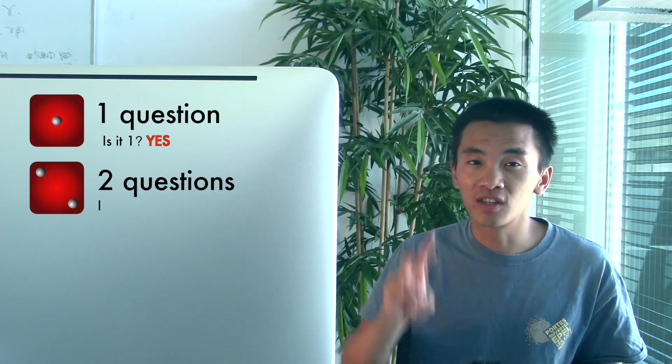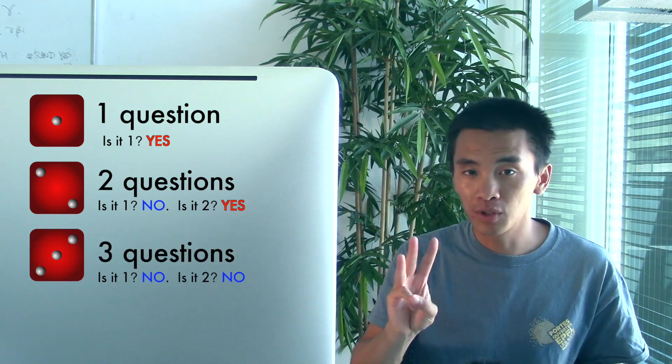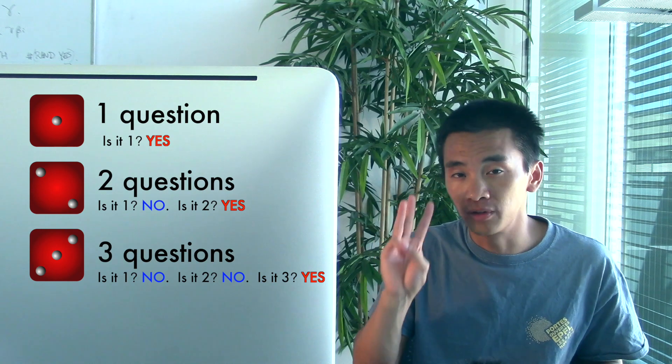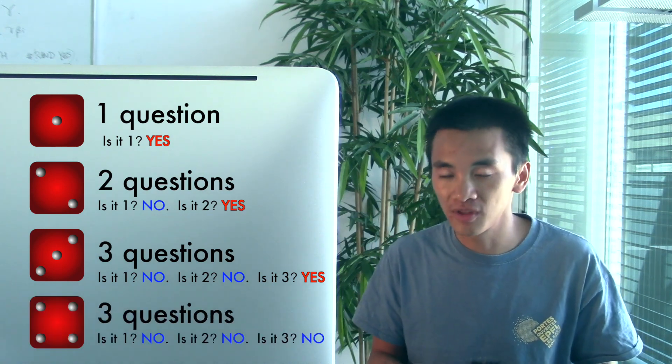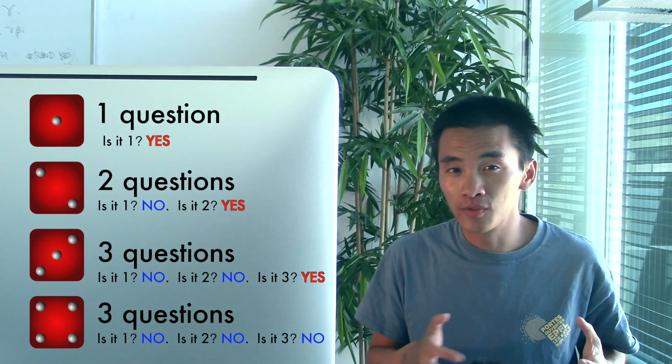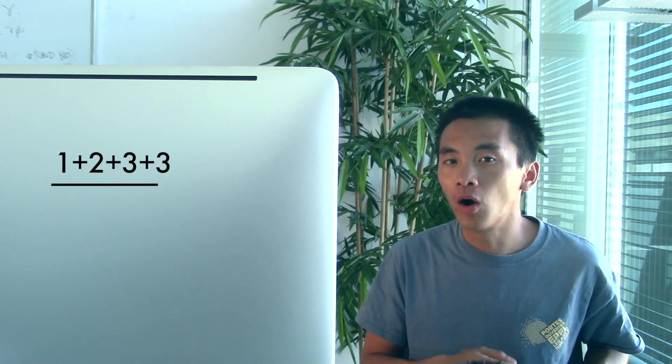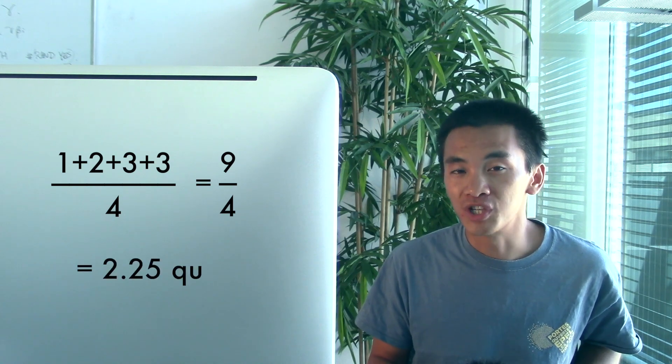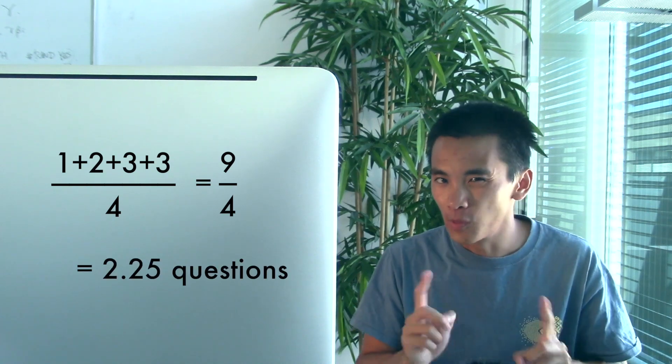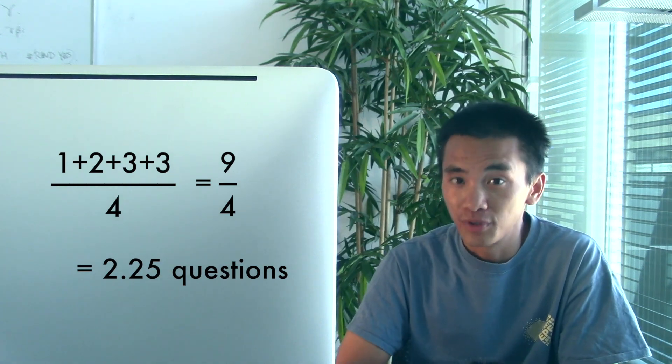Let's compute it. If the answer is 1, you need 1 question. If the answer is 2, you need 2 questions. If the answer is 3, you need 3 questions. And if the answer is 4, you only need 3 questions, because after the third question you know the answer must be 4. On average, you need 1 plus 2 plus 3 plus 3, all divided by 4, which equals 9/4, or 2.25 questions. This is more than the two questions that information theory promised.